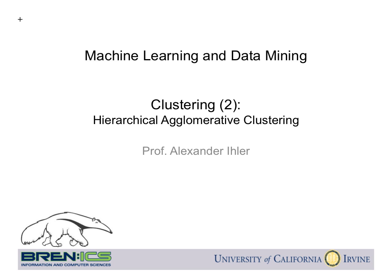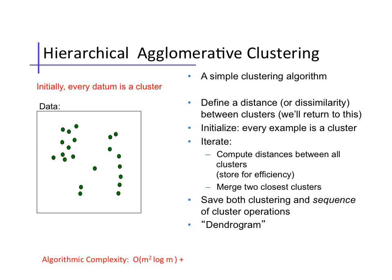The first clustering algorithm we'll look at is hierarchical agglomerative clustering, a simple algorithm for partitioning data into groups. We start by defining a measure of the distance or dissimilarity between two groups. We'll return to what this is exactly in a moment.